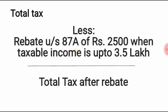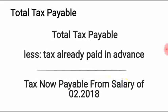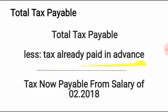After computing total tax, you will less the rebate under Section 87A — a rebate of Rs. 2,500 — available to those whose total taxable income is up to Rs. 3.5 lakh. This gives your total tax after rebate. On that, you will add 2% as primary education cess, which is 2% of tax after rebate. The amount of tax already paid is then subtracted from the total tax payable, giving you the tax now payable from the salary of February 2018.